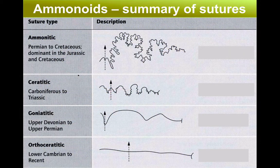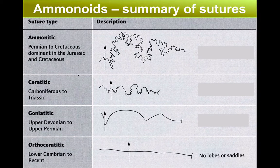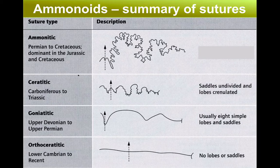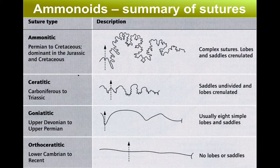This diagram summarises these changes. The orthoceras type at the bottom, the oldest ones, has virtually a straight line. As we progress further in time, we see a goniatite-type suture with very simple lobes and saddles. Then the ceratitic type of suture with smooth, undivided saddles but with crinkly lobes. And finally, the ammonites with their complex crinkly lobes and saddles of the suture line.